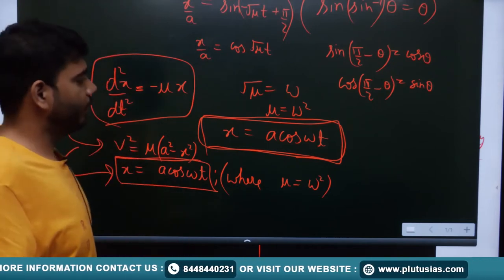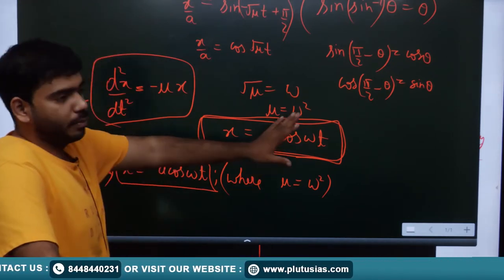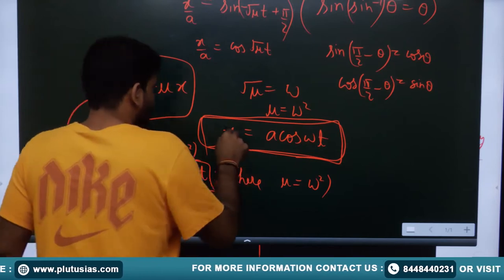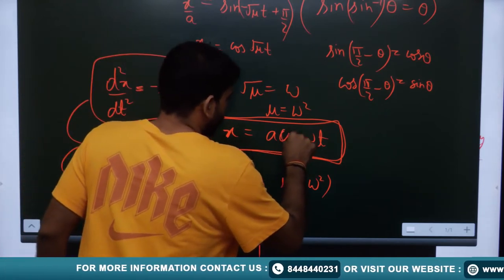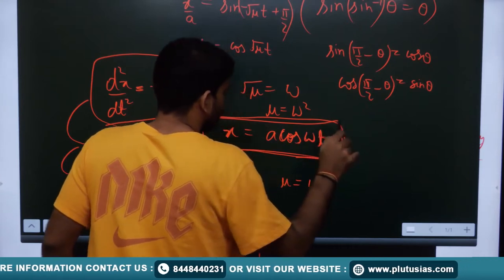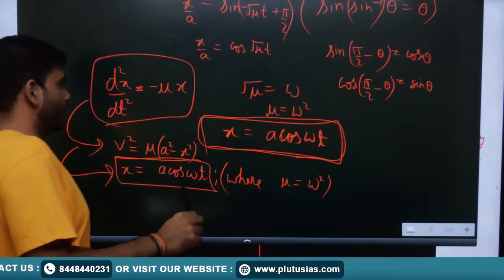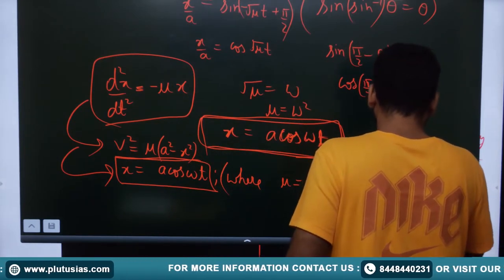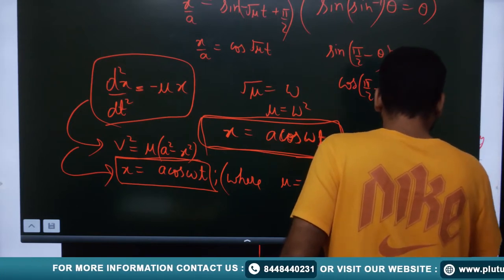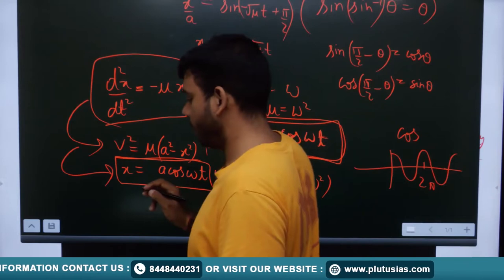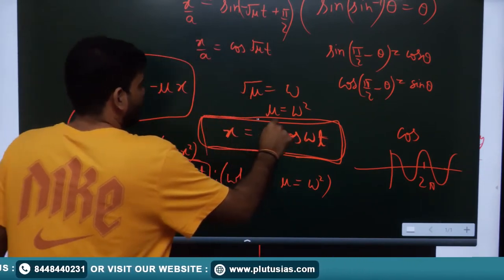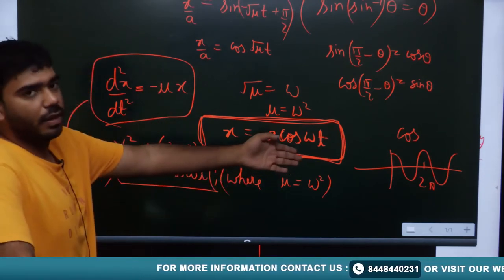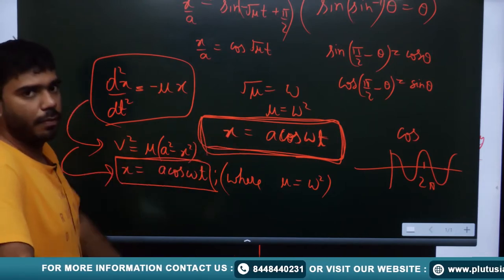So to summarize our derivation: we started with the second order differential equation, first got the velocity-distance relation v² = ν(a² − x²), then solved further to get the position-time relation x = a·cos(ωt). Since position is represented by a cosine function — which is a well-known cyclical function with period 2π — it is clear that the particle's position follows a cyclical, iterative pattern, confirming the harmonic nature of the motion.